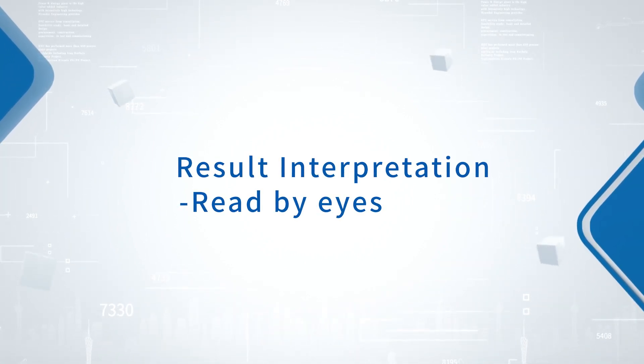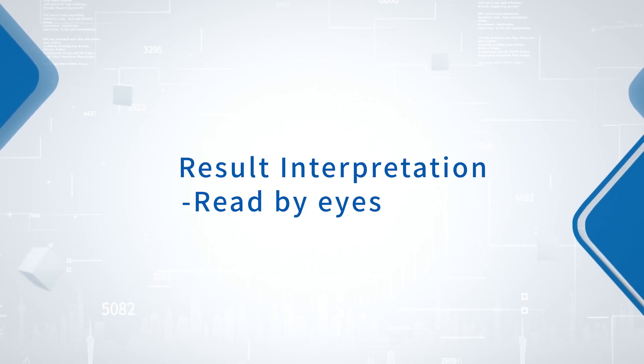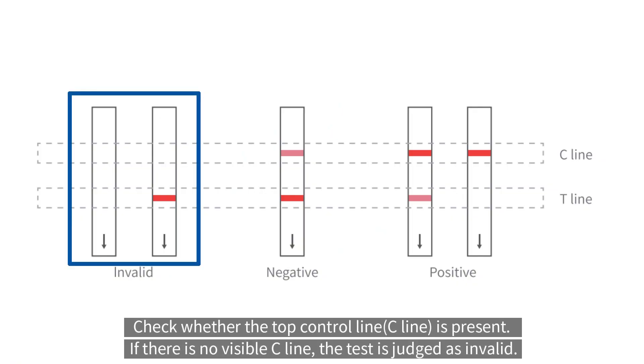Result interpretation Read by eyes. Check whether the top control line is present. If there is no visible C line, the test is judged as invalid.